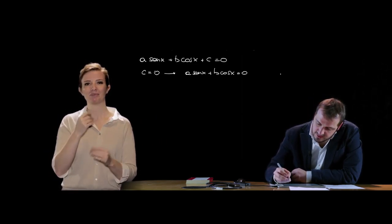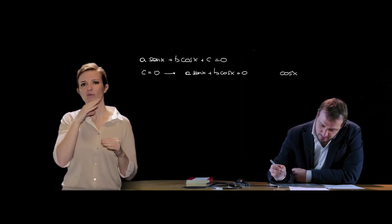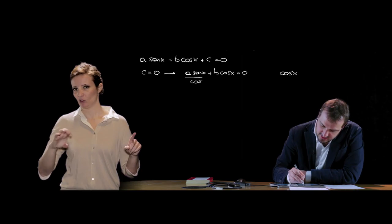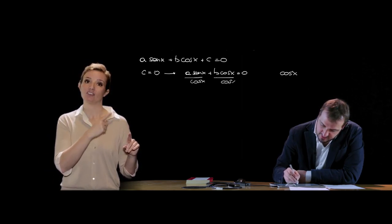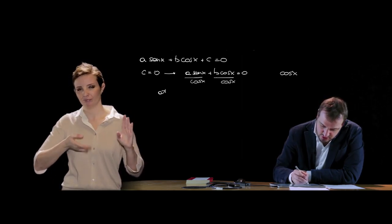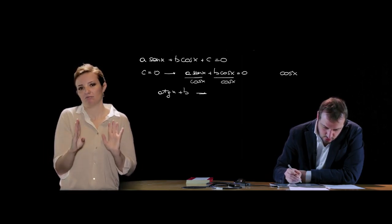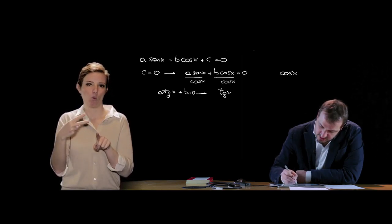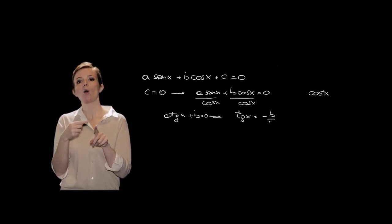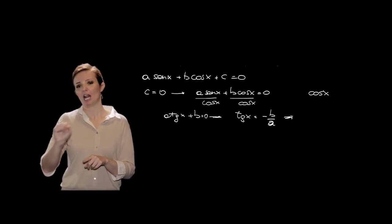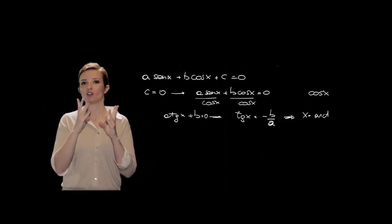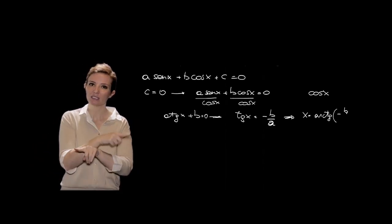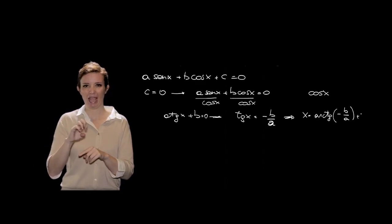L'equazione omogenea di primo grado si risolve dividendo primo e secondo membro per cos x, ottenendo a·tan x + b = 0, quindi tan x = −b/a. La soluzione generale è x = arctan(−b/a) + kπ, utilizzando la funzione inversa della tangente.